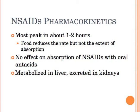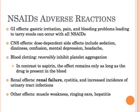NSAIDs are metabolized in the liver and excreted in the kidneys. Gastric irritation, pain, and bleeding problems can occur with all NSAIDs — they interfere with the normal protective mechanisms in the stomach and can even cause an ulcer. CNS side effects are dose-dependent and can include sedation, dizziness, and confusion. NSAIDs interfere with clotting but not as long as aspirin, and they are harmful to the kidneys in high doses. These agents are not addicting — tolerance does not develop, and patients don't develop withdrawal symptoms if they stop taking them.